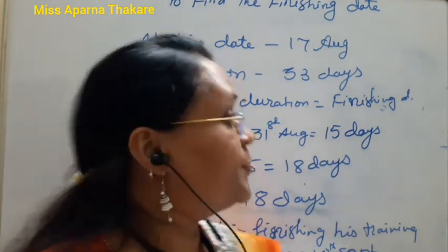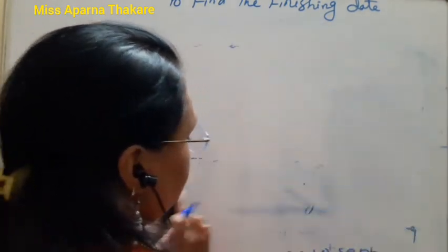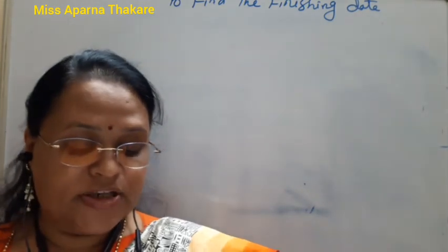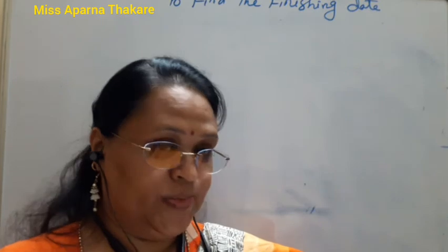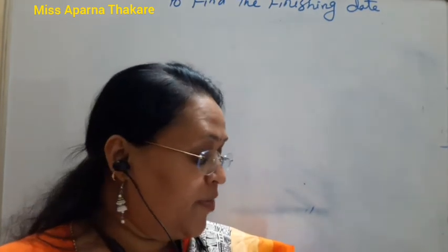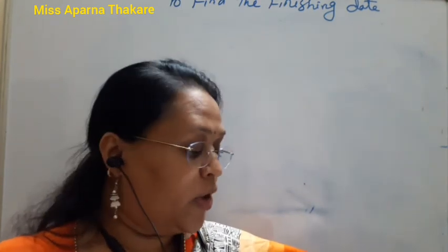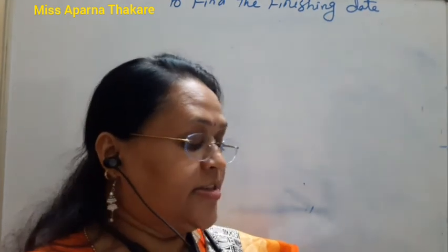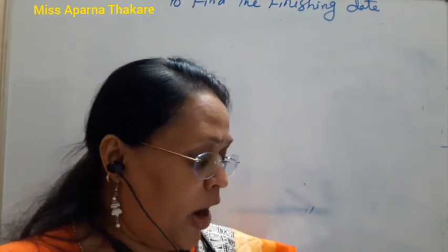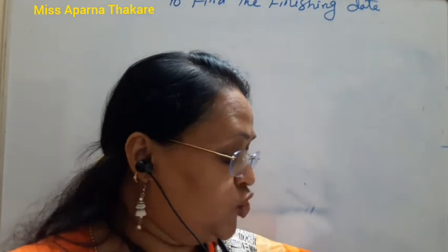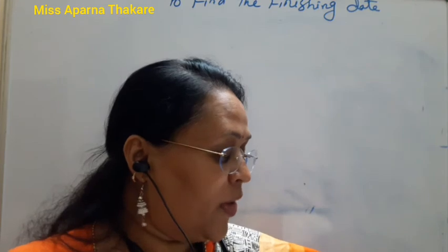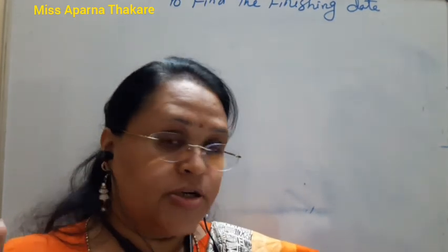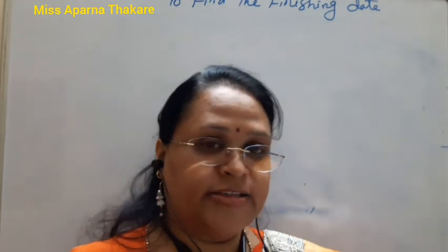Now we find the starting date. Rijul returned from his 21-day holiday on 10th June. Wait — 10th July. When did his holiday begin? We need to count backward to find the starting date. From 10th July back to 1st July is 10 days.